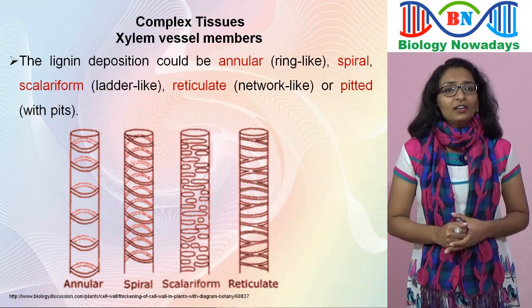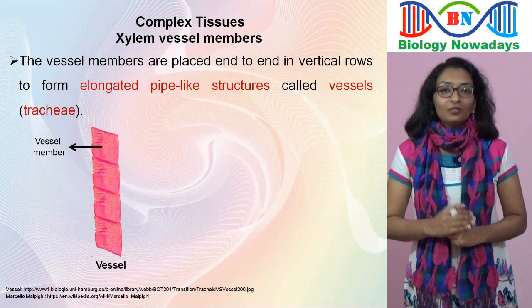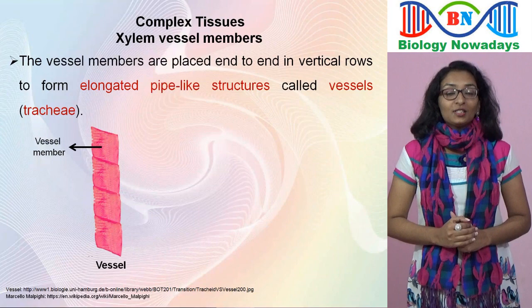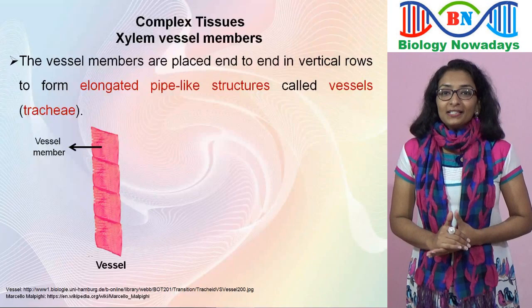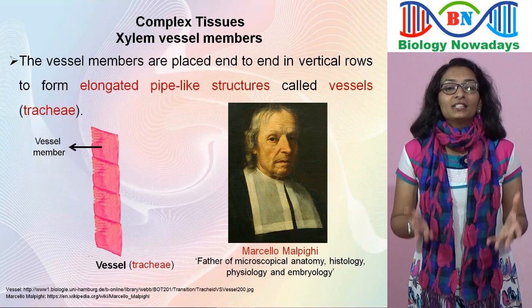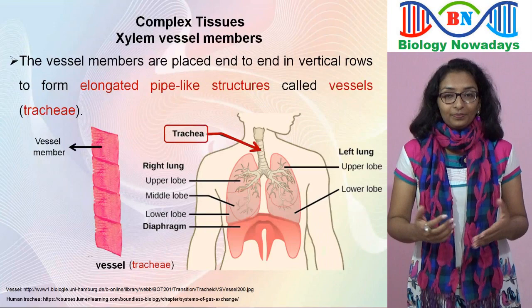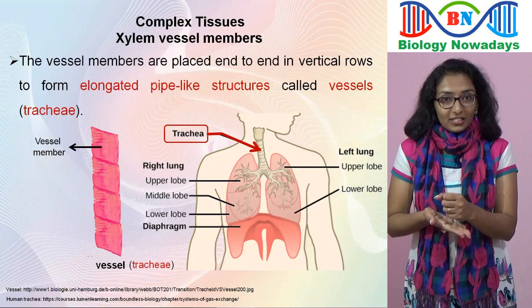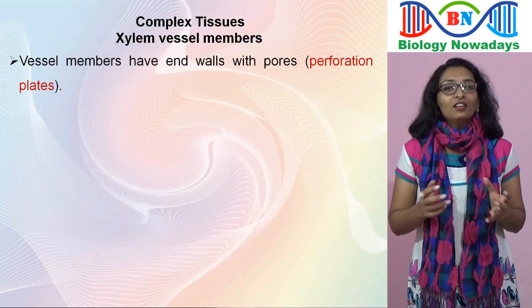The vessel members are placed end to end in vertical rows to form elongated pipe-like structures called vessels. Vessels are also called trachea. The name trachea was given to xylem vessels by the Italian botanist Marcello Malpighi, because of the similarity between the morphology of xylem vessels and that of the trachea or windpipe seen in insects and animals. The end walls of each vessel member have pores; these end walls with pores are called perforation plates, and the vessel members in a vessel are connected by the perforation plates.